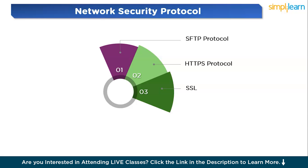Imagine a security department in your city: HTTPS works like a security gatekeeper, verifying who enters. SSL acts as an encrypted vault where sensitive documents are stored to prevent hacking. SFTP works like secure couriers, where government officials use trusted couriers with identity verification to transfer classified documents. In the same way, these security protocols safeguard digital communication against cyber threats.